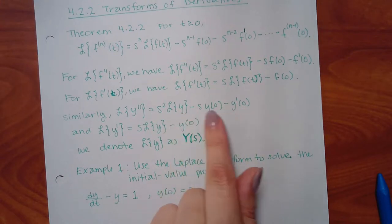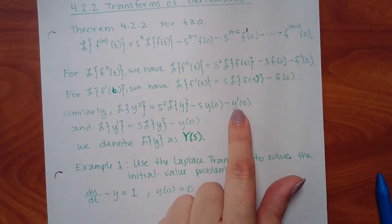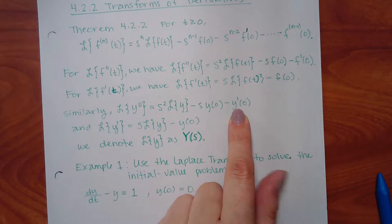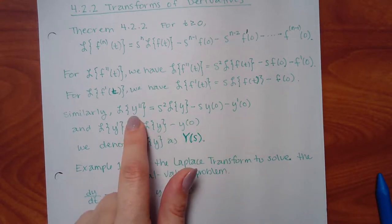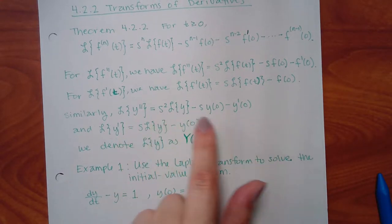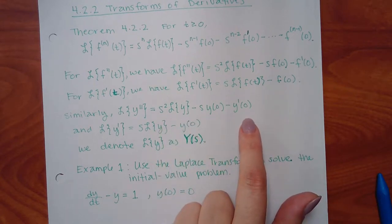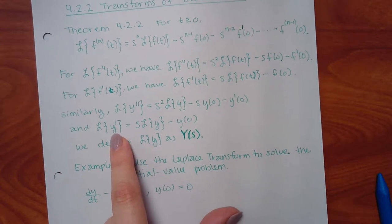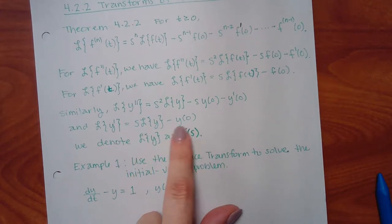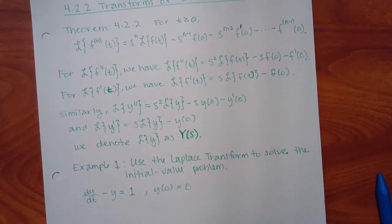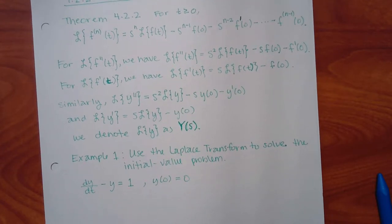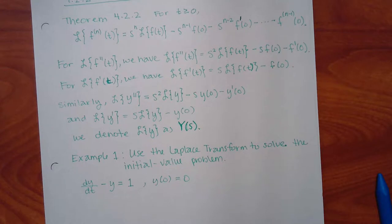It may look like there's still a prime, but it's not — it's just a value that's going to be given to you, just a number. You're turning something that had derivatives into something that no longer has any derivatives. The theorem is always evaluated at 0 — it's Y of 0, F of 0, always at 0. So when they give you initial conditions, they're always going to be when T is 0.